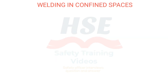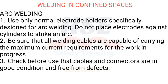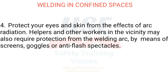Welding in confined spaces: all heating and cutting torches must be removed to fresh air at mealtimes, end of shift, or earlier if work is completed. It is the employee's responsibility to ensure oxygen and fuel hoses are isolated at the source at the end of the working shift. ARC welding: use only normal electrode holders specifically designed for arc welding; do not place electrodes against cylinders to strike an arc. Ensure all welding cables are capable of carrying the maximum current requirements. Check cables and connectors are in good condition and free from defects before use. Protect your eyes and skin from arc radiation; helpers in the vicinity may also require protection via screens, goggles or anti-flash spectacles.